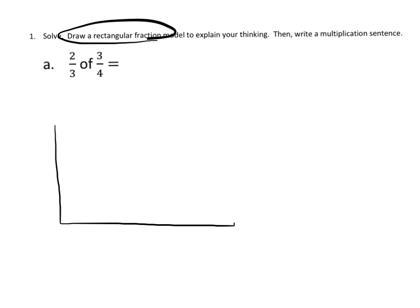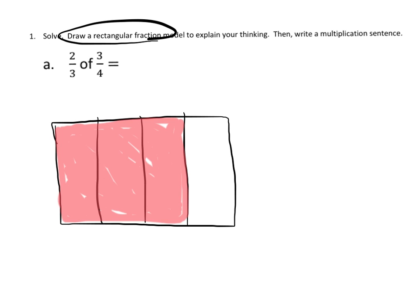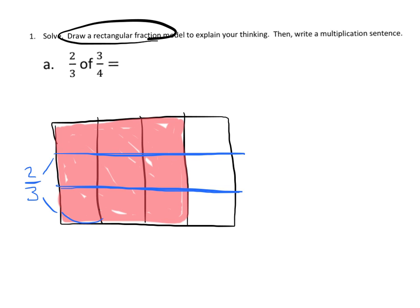So I'm going to draw one whole, and I'm going to begin by drawing 3 fourths. So here's my 3 fourths, and now we're supposed to find 2 thirds of 3 fourths. So just like we've been doing in previous videos, we would draw horizontally thirds. Here's our thirds. And then we want 2 thirds of the 3 fourths, so that makes this much right here is our 2 thirds of our 3 fourths.